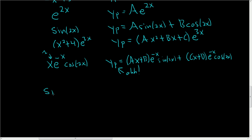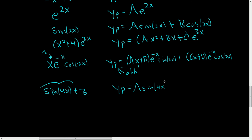What if you had sin(4x) + 3? First take care of the sine: you need A·sin(4x) + B·cos(4x). Then take care of the 3, so plus C. That's how you find y_p ignoring the homogeneous solution.